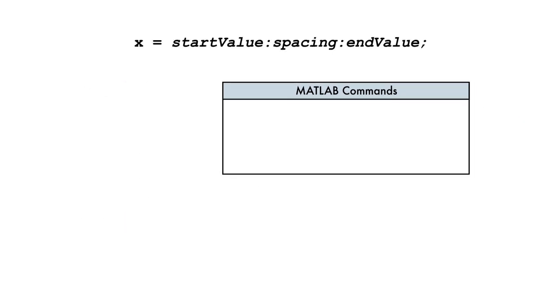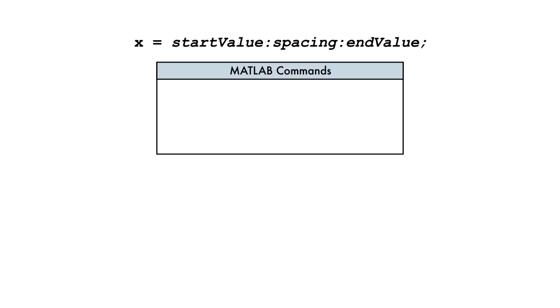Fortunately, there's a better way. We can create the same vector with just three numbers: the start value, the spacing, and the end value.